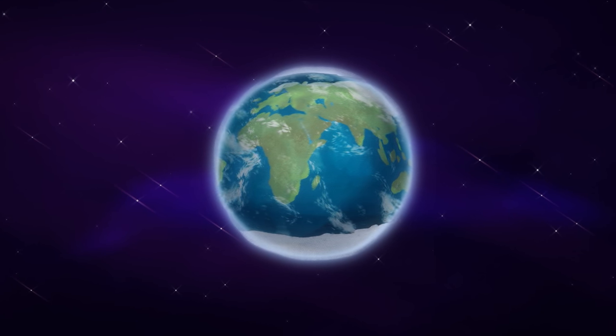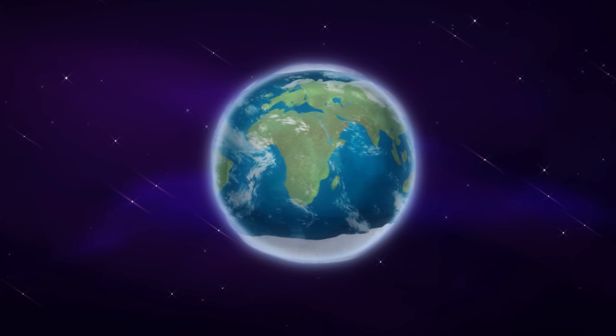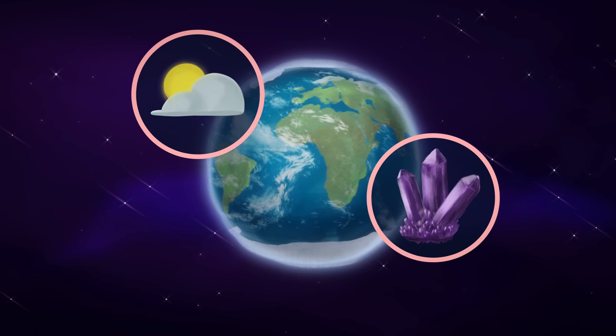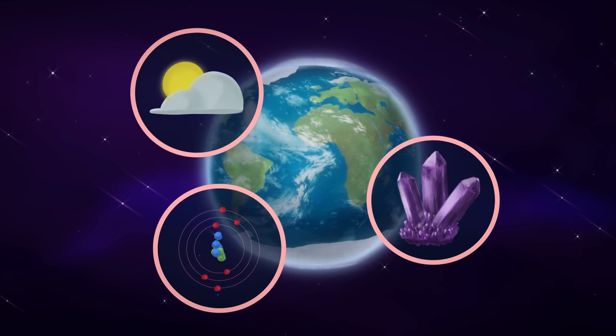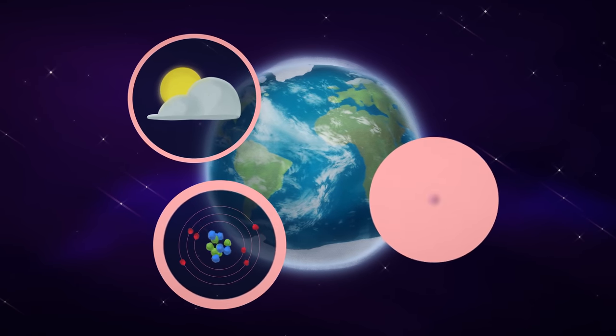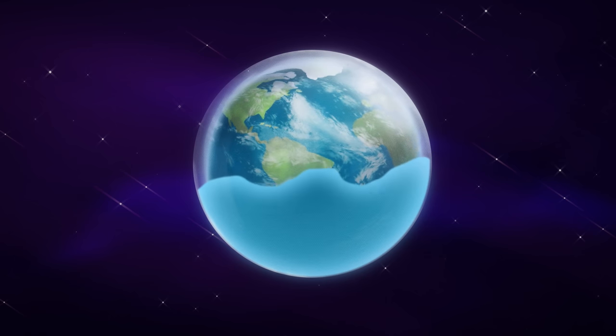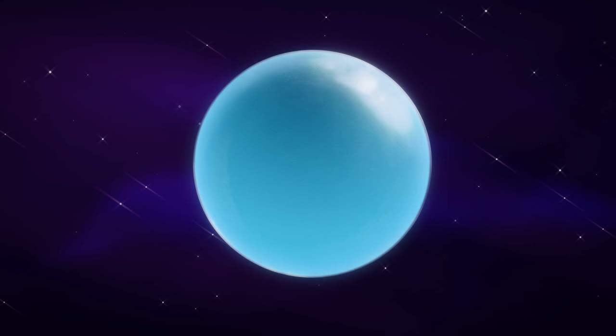We inhabit a little blue planet called Earth. Earth is habitable because it has the right conditions and ingredients to enable life as we know it to evolve and flourish. And one of the most important factors in making our blue planet habitable is the wet stuff itself, water.